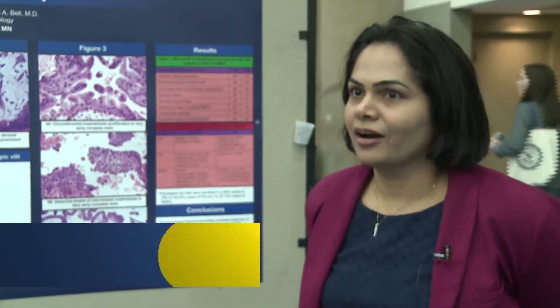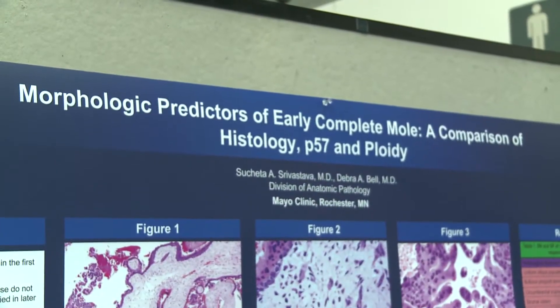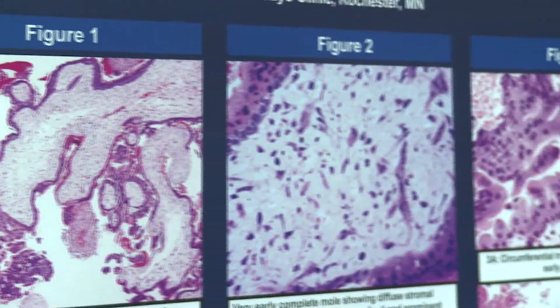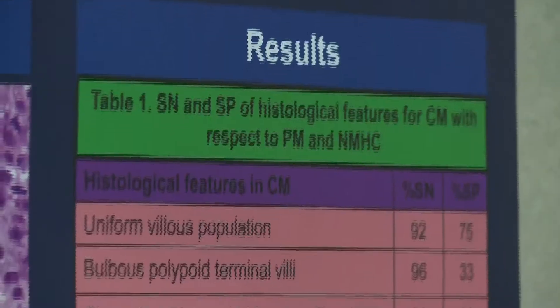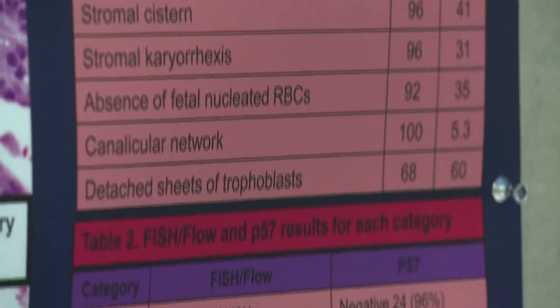This is a poster where I have described morphological findings that are seen in very early complete molar pregnancies, and we have compared these findings with partial mole and non-molar hydropic pregnancies. We selected about 100 cases and evaluated morphological features.